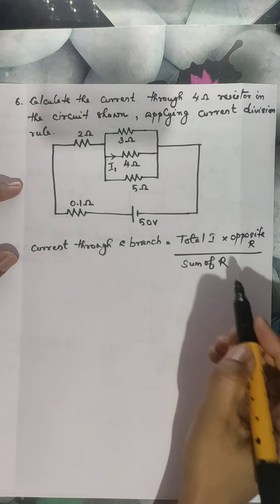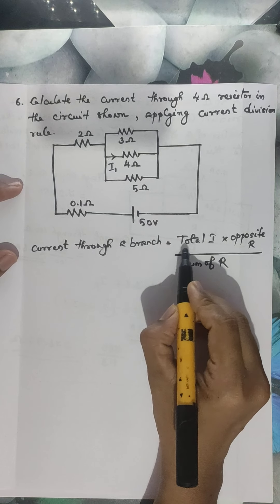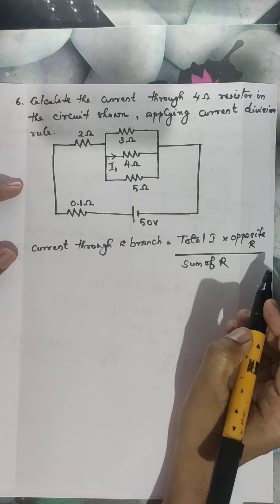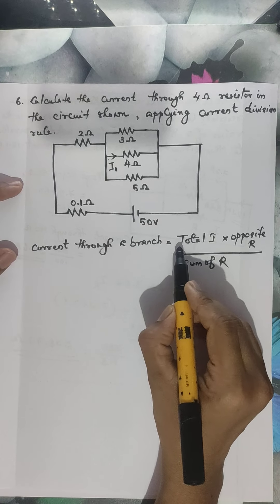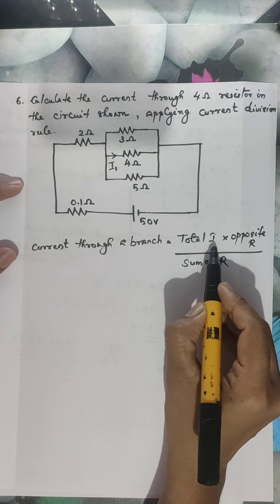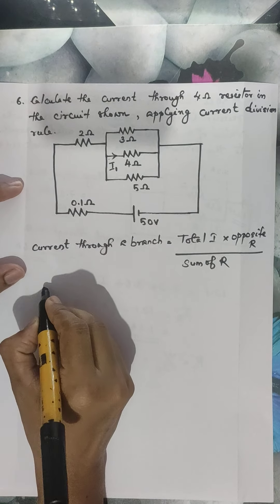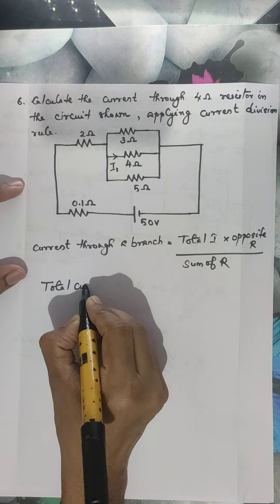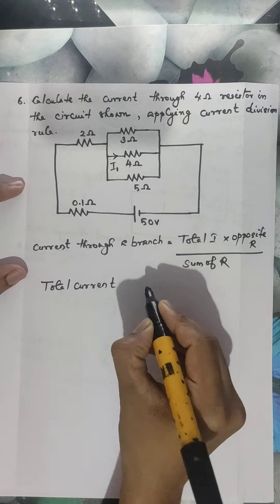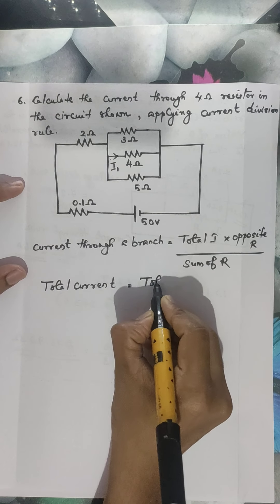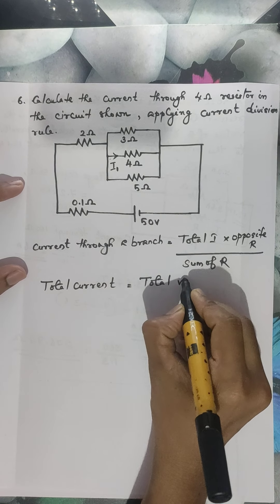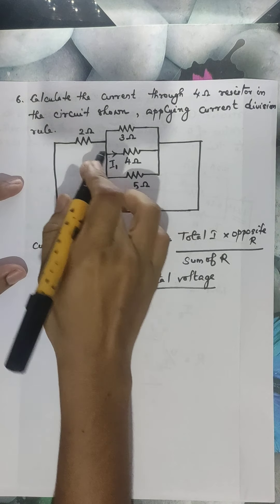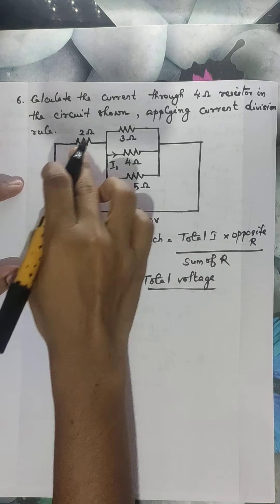The opposite branch resistances are given and we can calculate the sum of resistances, but what is required first is the total current I. So in order to apply the current division rule, we should know the total current I. Let us first calculate the total current I of this circuit.